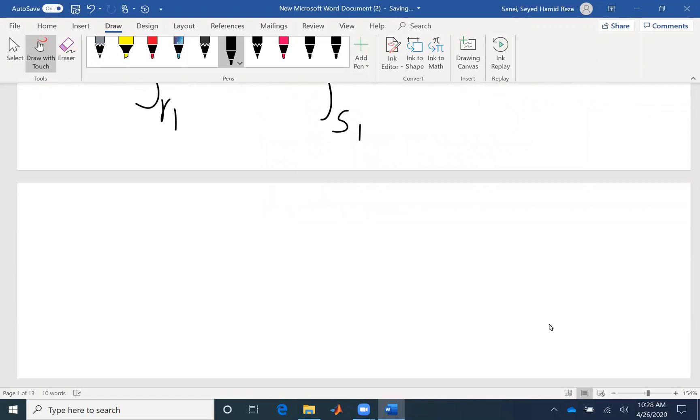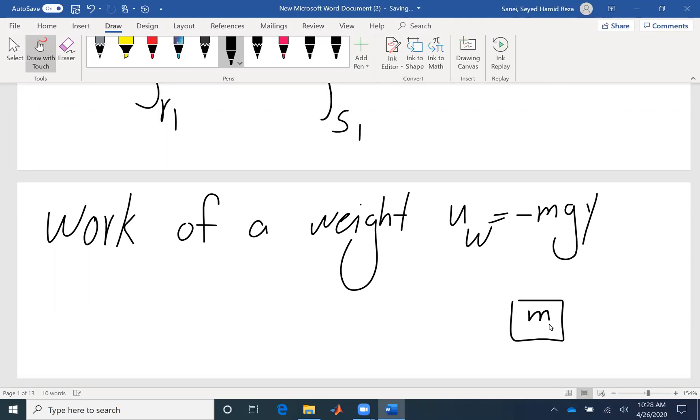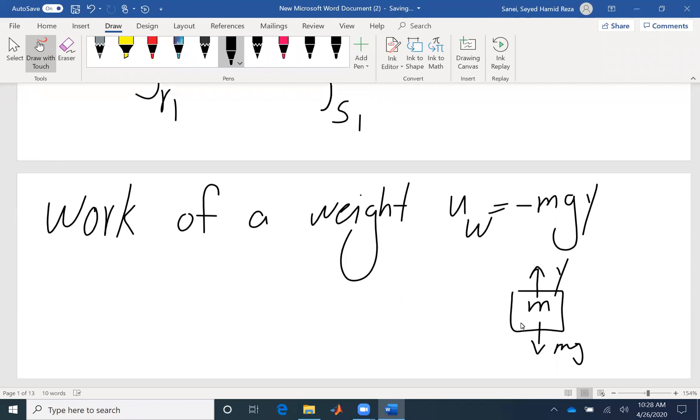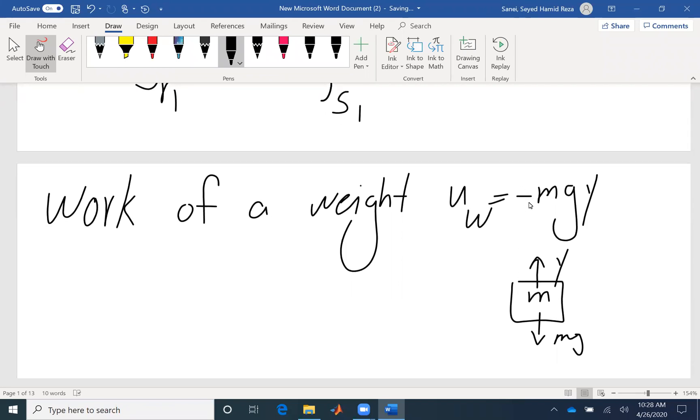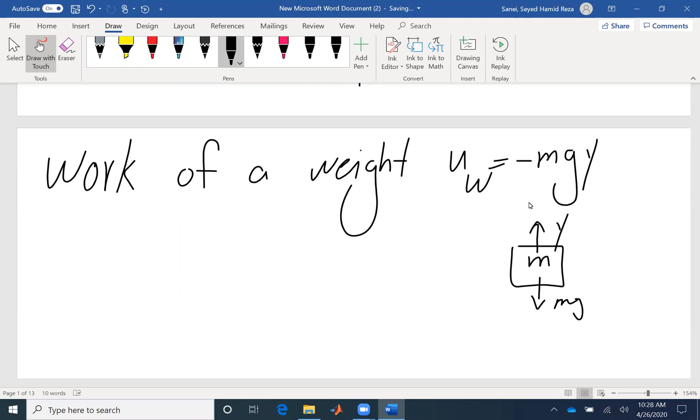So let's talk about the work of a weight, which is a common component in work and energy problems. I'll show it by U sub W. The force is mg and the displacement is y. If the displacement is in the negative direction of weight, then you have a negative sign. That negative sign represents cosine of 180.